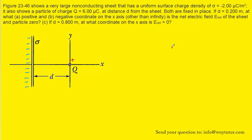We know that if we had a positive charge, the electric field produced by that positive charge would point away from the positive charge. On the other hand, if we had a negative charge, then the electric field will point towards the negative charge.